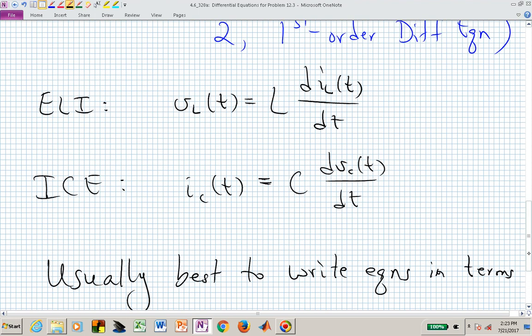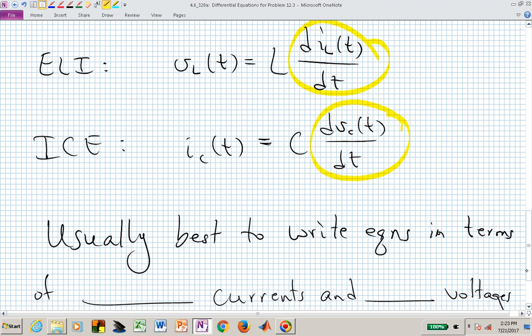And which current and which voltage? Well, it's the variables that are in the differential relationship of these current voltage relationships. The inductor current is what is in the derivative term of ELI, or it's actually the last variable in ELI. The voltage is the last variable in ICE.